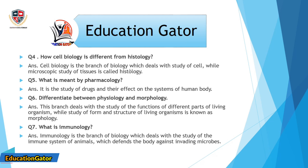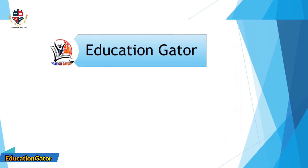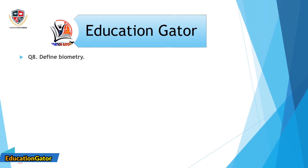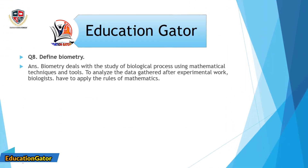Question number 7: What is immunology? Ans. Immunology is the branch of biology which deals with the study of the immune system of animals, which defends the body against invading microbes.